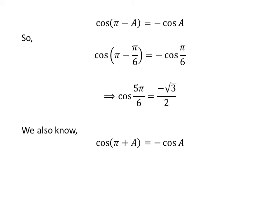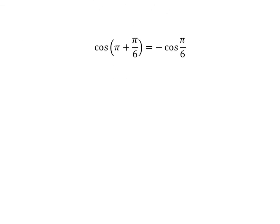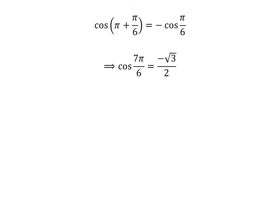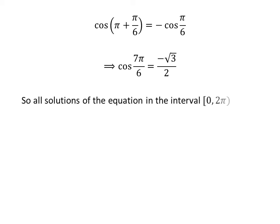We also know the trigonometric identity cosine of pi plus a is equal to minus cosine of a. Applying the identity gives us cosine of 7 times pi upon 6 is equal to minus square root of 3 upon 2. So the solutions to the equation 3 times secant of x minus 4 times cosine of x is equal to 0 in the interval 0 to 2 times pi are pi upon 6, 5 times pi upon 6, 7 times pi upon 6, and 11 times pi upon 6.